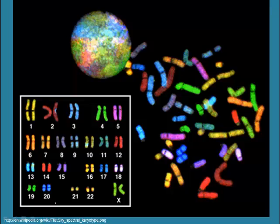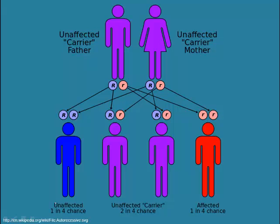Genes always occur in pairs, and half of each person's genes come from the mother and half from the father. Together they dictate traits. Most ordinary traits like eye colour and height are controlled by several different genes. This has been a brief introduction to genes and chromosomes and how DNA functions to control traits.